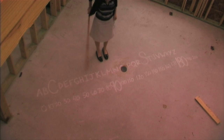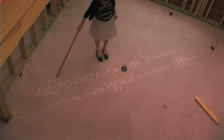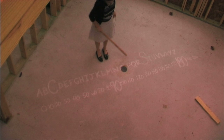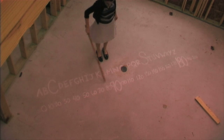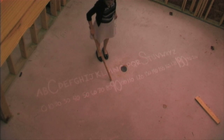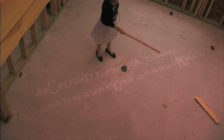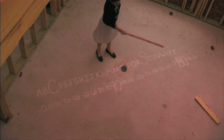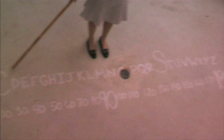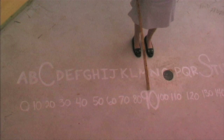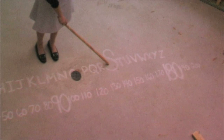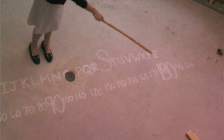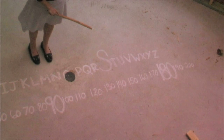In the alphabet, the letter C for complementary comes before the letter S for supplementary. And on a number line, 90 comes before 180. So C, complementary, goes with 90 degrees and S, supplementary, goes with 180 degrees.